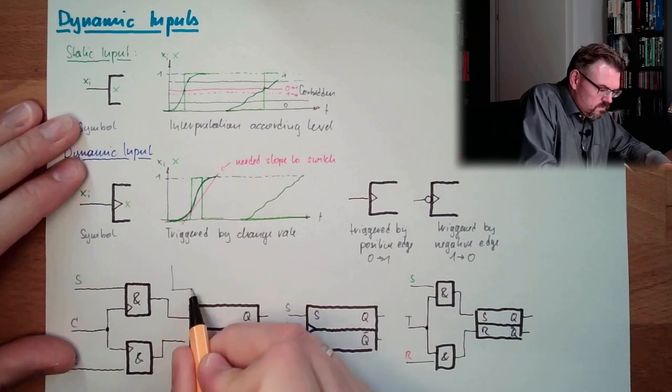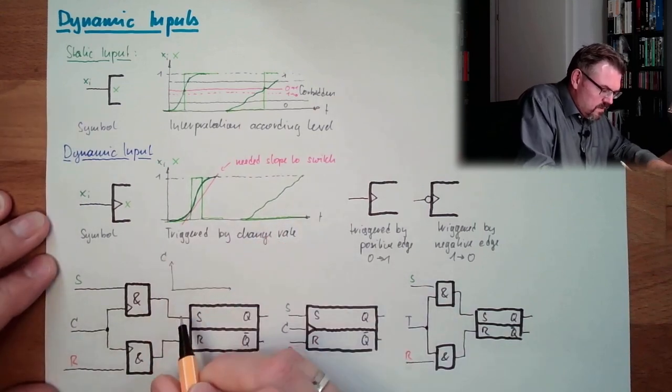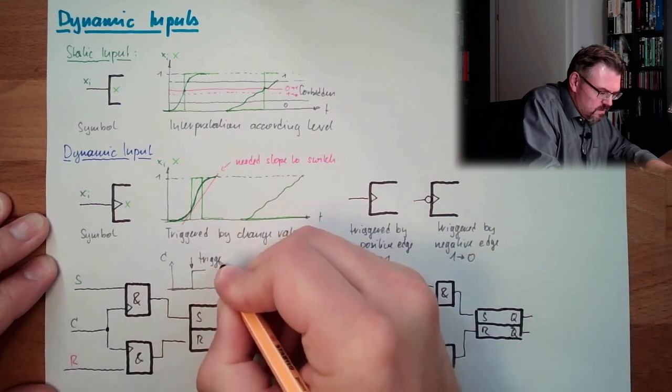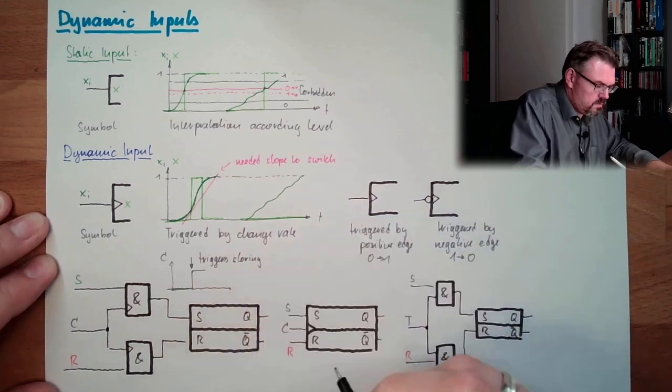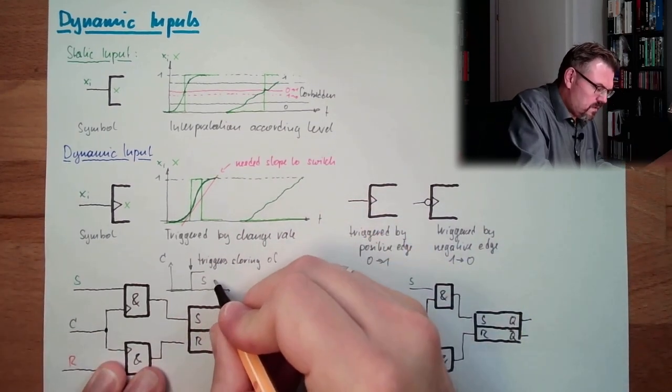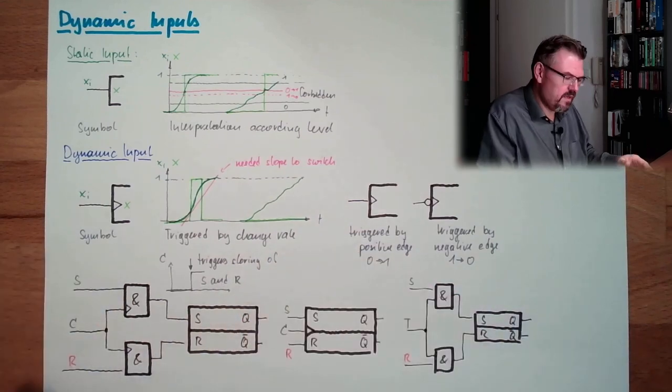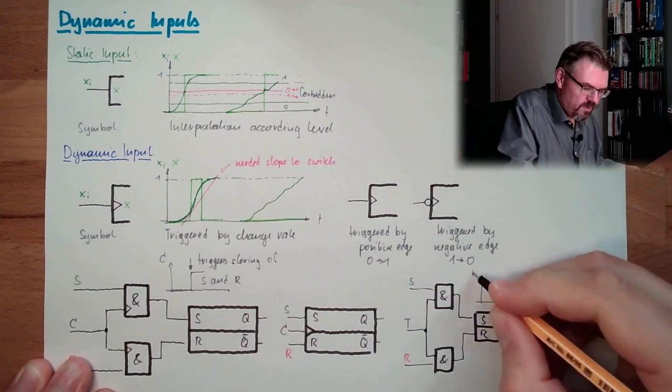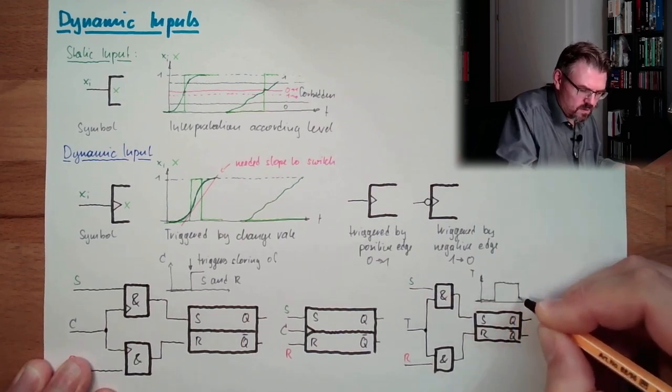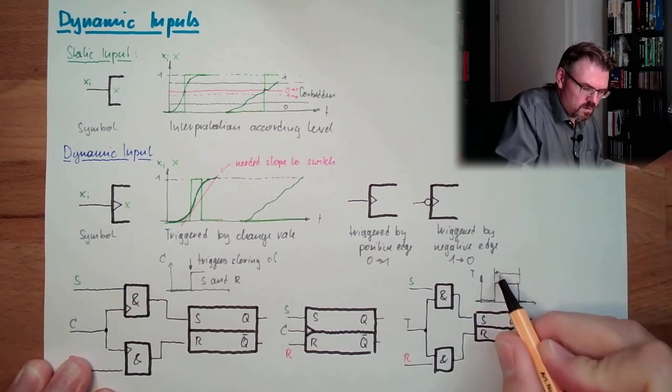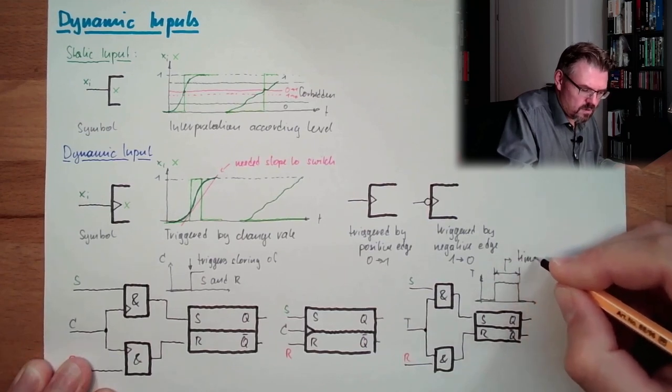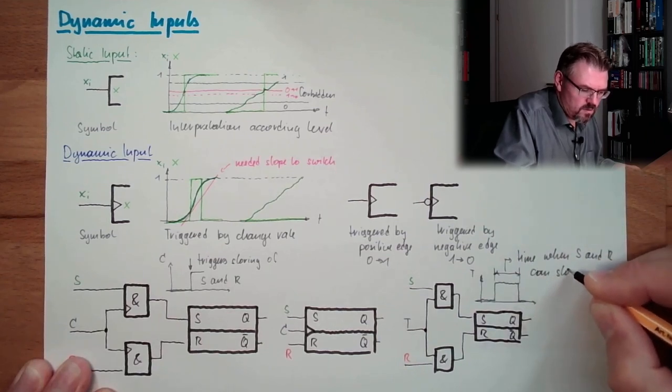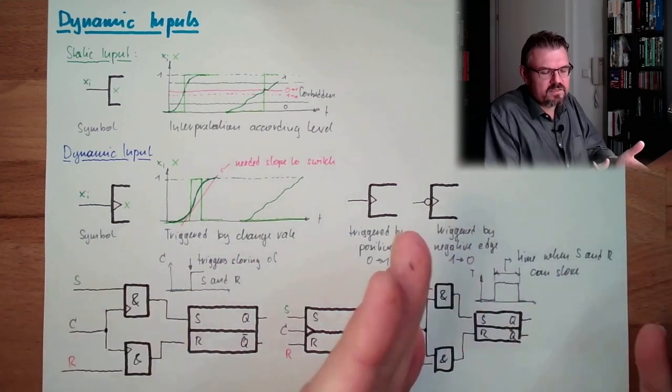So whenever C changes from 0 to 1, this triggers storing. Trigger storing of S and R. Whatever S and R indicates, here exactly at this. And here, we would have it like that. That if we're looking at T, and this is the time when S and R can store. So here, it's a certain point in time. And here, it's a time period, when I can store.